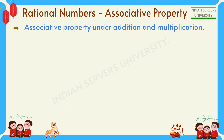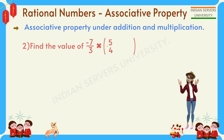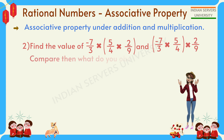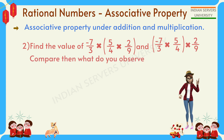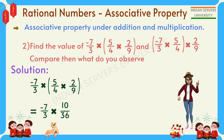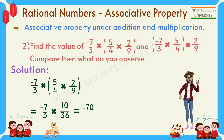Next, let us check multiplication. Find the value of ((-7/3 × 5/4) × 2/9) and (-7/3 × (5/4 × 2/9)) and compare them. For the first expression, solve the bracket: 5 × 2 = 10, 4 × 9 = 36. So -7/3 × 10/36. Multiplying: (-7) × 10 = -70, 36 × 3 = 108. So we get -70/108.